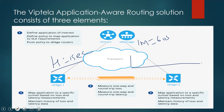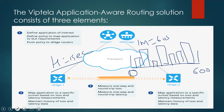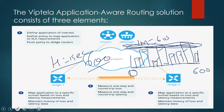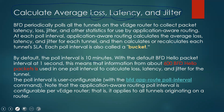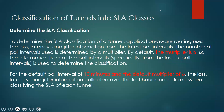All these items are configurable. You can type 'BFD app-route multiplier' to change it, and we have an 'app-route poll interval' we can change as well. There's a summary: you have a BFD hello timer of one second, a polling interval of 10 minutes for taking samples, and a multiplier — default is six, range is one through six. According to the average loss, latency, and jitter calculated, the policy can take action to change the forwarding path.